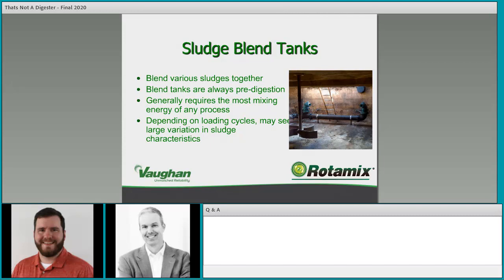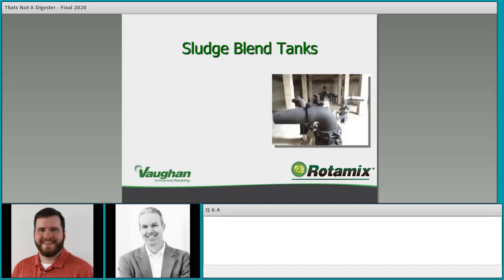You might have periods with higher concentrations of maybe thickened secondary sludge versus thinner primary sludge, which can change the consistency in the blend tank and the mixing energy needed. Mixing design must provide a homogeneous feed to the digester or dewatering process so that those processes can be most efficient.